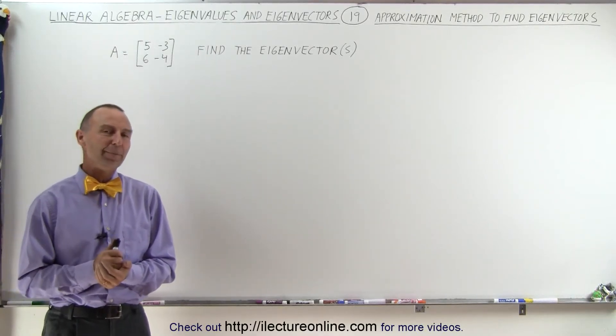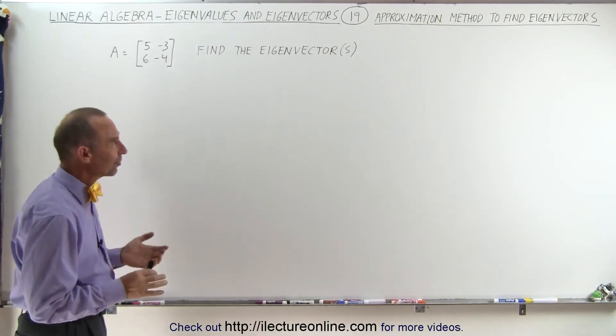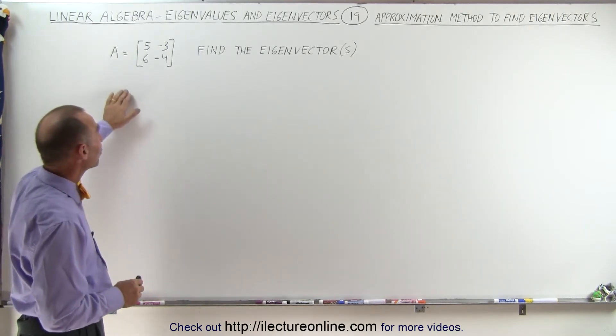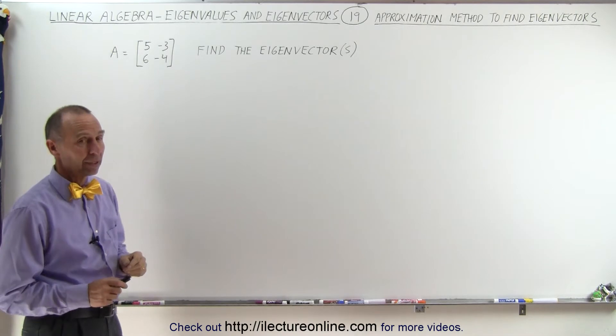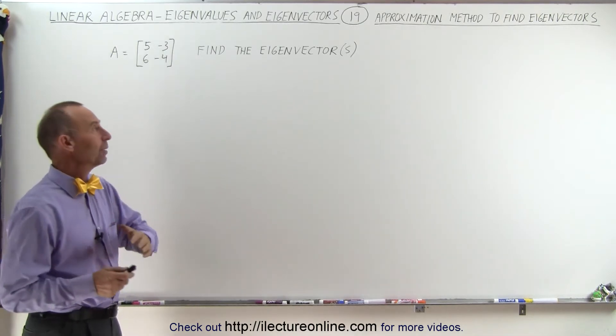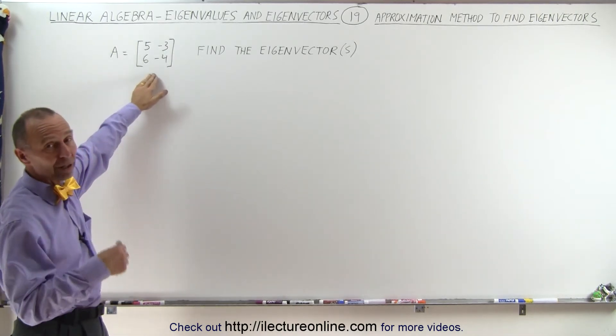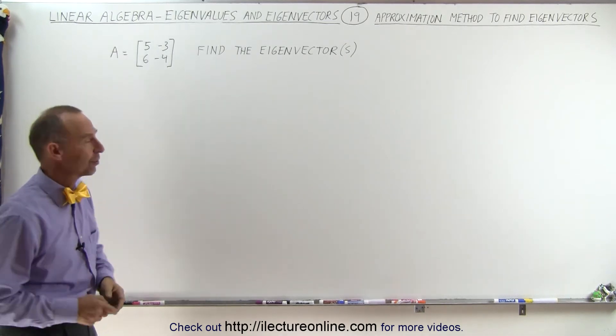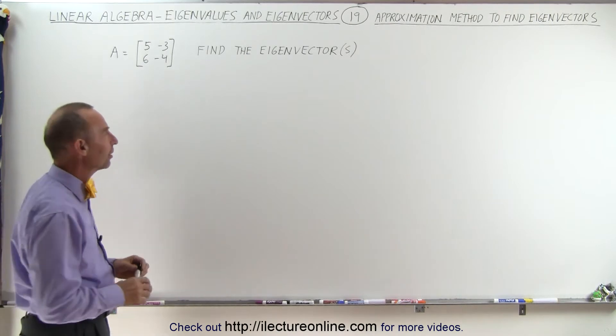Welcome to iLecture online. Now here we have a very interesting approximation method to find the eigenvectors of a matrix. Now we know how to do it typically. What we would normally do is find the eigenvalues first and then use those eigenvalues to find the corresponding eigenvectors. But there's another way, there's an approximation method.